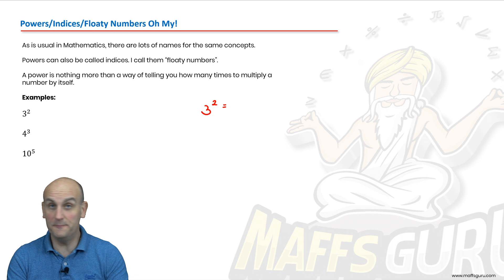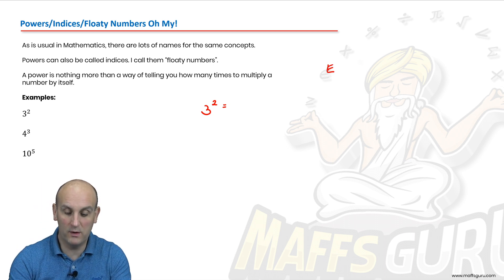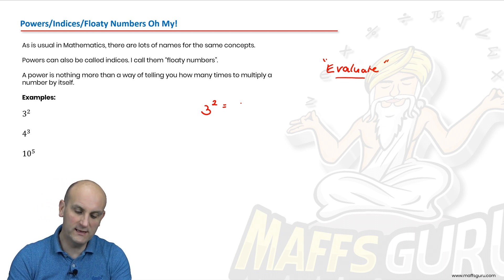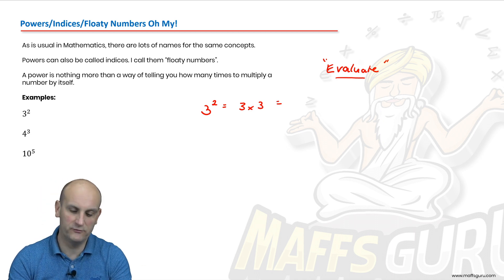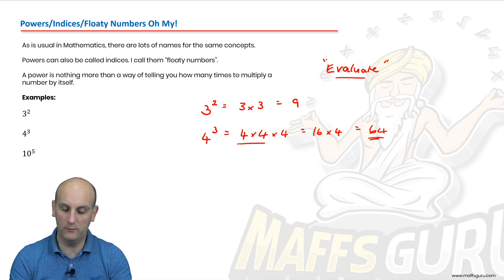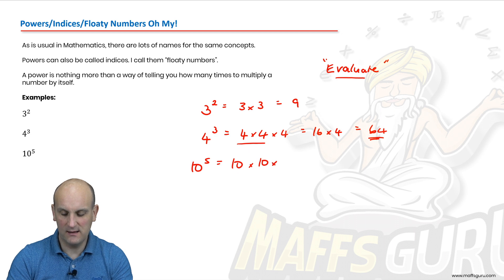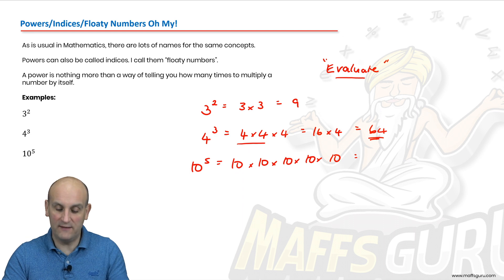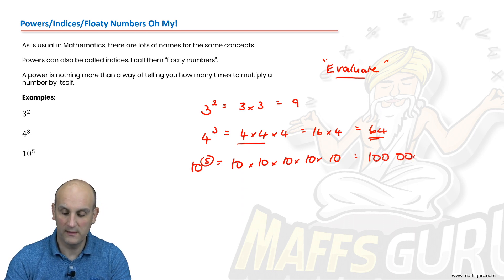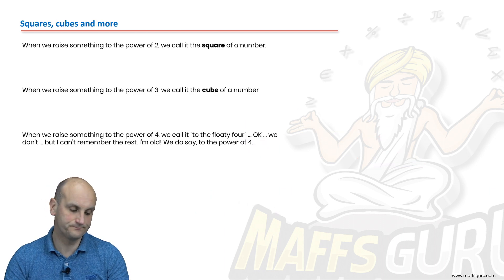Here are some examples. Three squared — what does it mean? Three squared is the same as three times three, which is nine. Four to the power of three is four times four times four. Four times four is sixteen, sixteen times four is sixty-four. Then ten to the power of five is ten times ten times ten times ten times ten, which gives one hundred thousand. Ten to the power of six, which we see a lot, is actually one million.